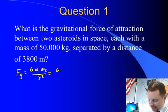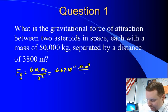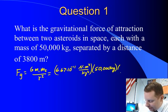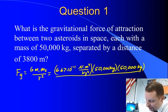Fg equals g m1 m2 over r squared. Big G again is 6.67 times 10 to the minus 11 Newton meters squared per kilogram squared, times the mass of our first asteroid, 50,000 kilograms, times the mass of our second asteroid, also 50,000 kilograms, divided by the square of the distance between them, 3,800 meters squared.